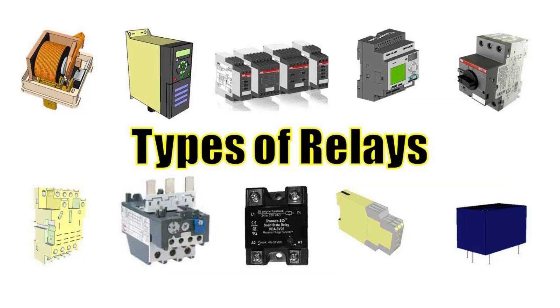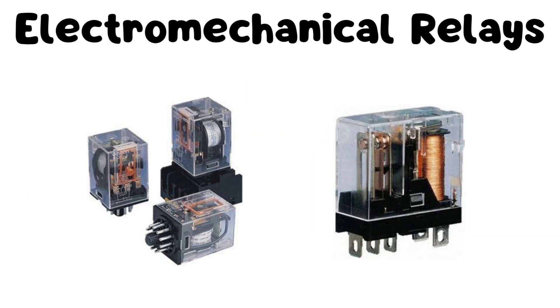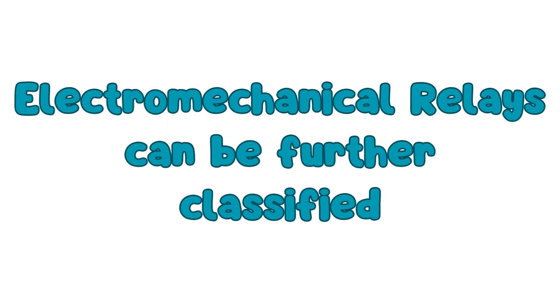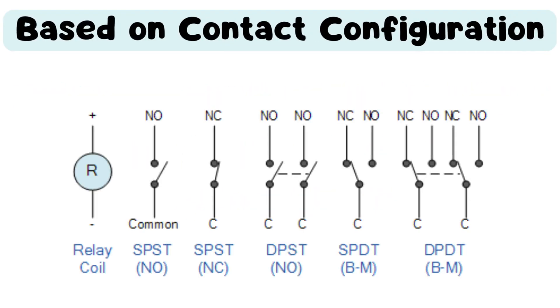There are several types of relays, each designed for specific applications and operating conditions. Here are some common types of relays. Electromechanical relays: These relays use mechanical contacts and an electromagnetic coil to control the switching operation. They are widely used and offer robust switching capabilities. Electromechanical relays can be further classified based on their contact configuration, such as Single-Pole Single-Throw (SPST) Relay, which has a single set of normally open or normally closed contacts.